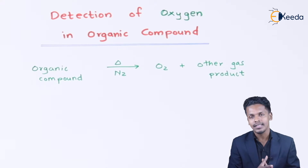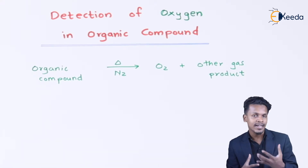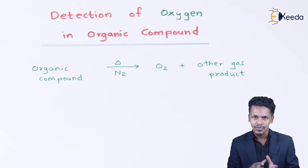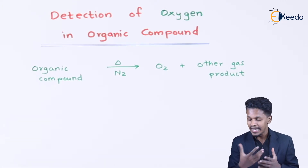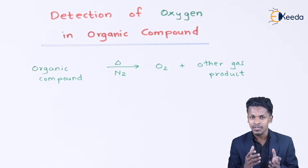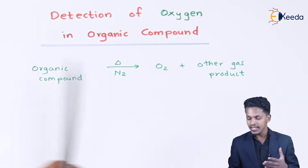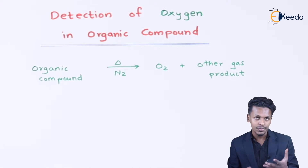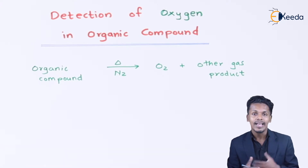The thing is we cannot detect the percentage of oxygen directly. We have to use different methods to estimate how much oxygen has been liberated when the organic compound was heated in presence of nitrogen. What we are going to do is supply it through red hot coke.